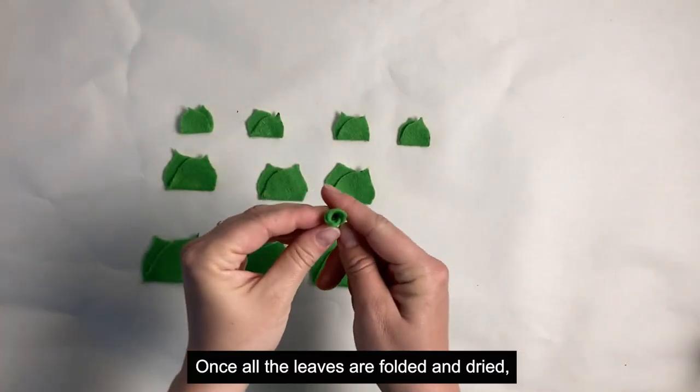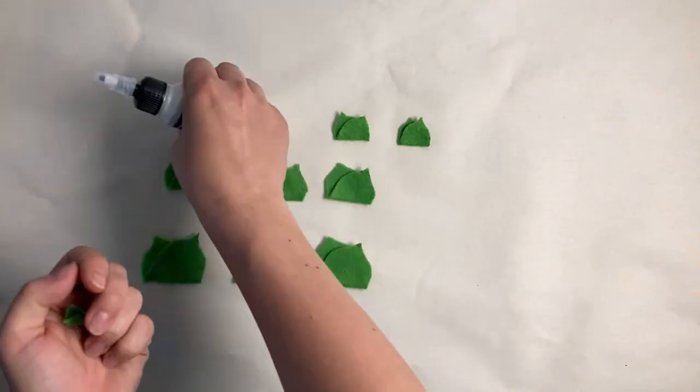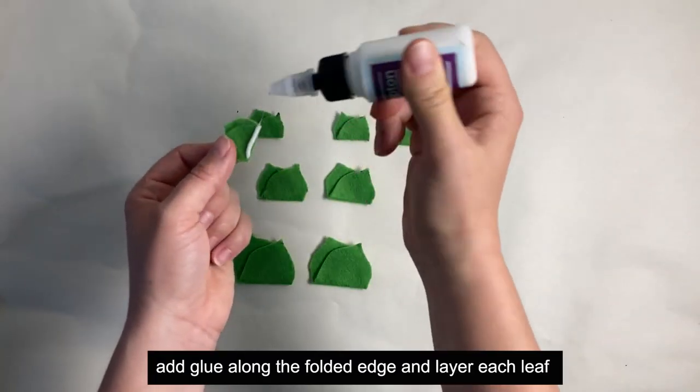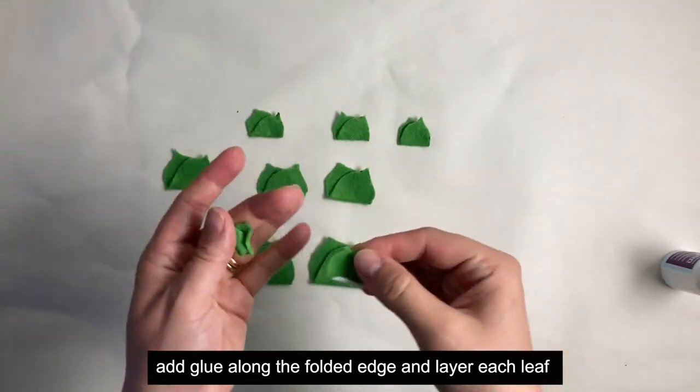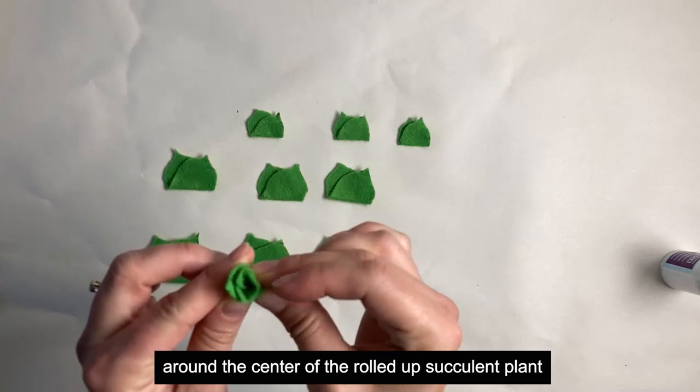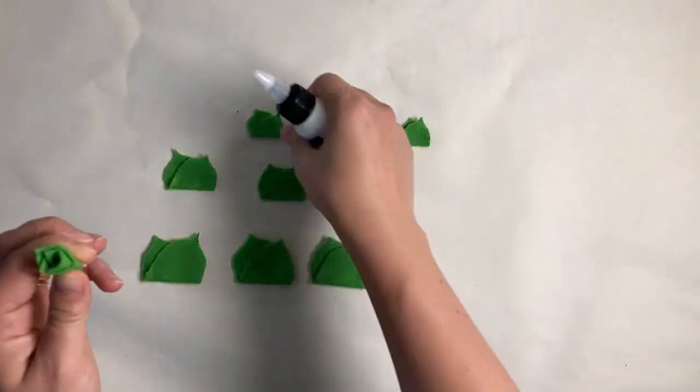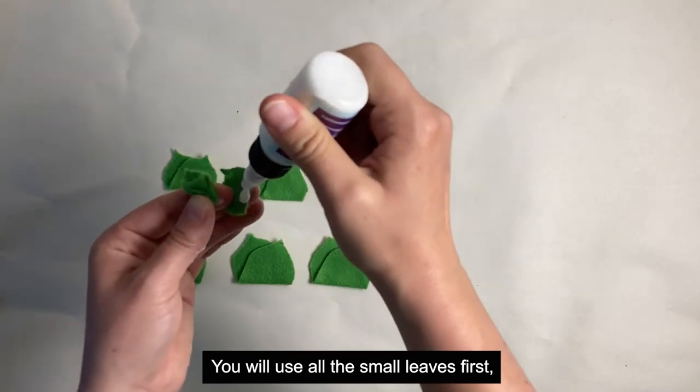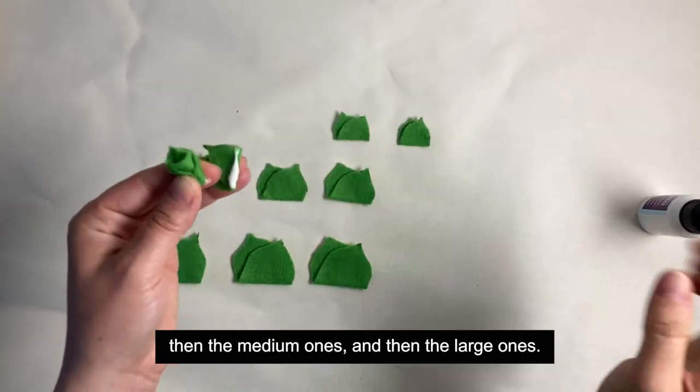Once all the leaves are folded and dried, you can construct your plant. Add glue along the folded edge and layer each leaf around the center of the rolled up succulent plant in a circular pattern. You will use all the small leaves first, then the medium ones, and then the large ones.